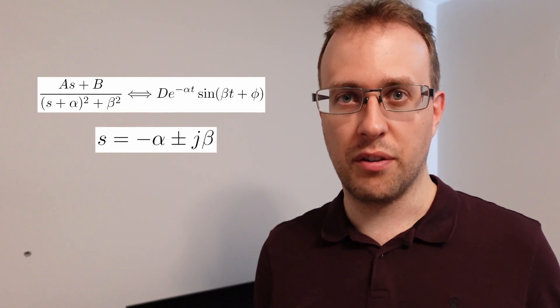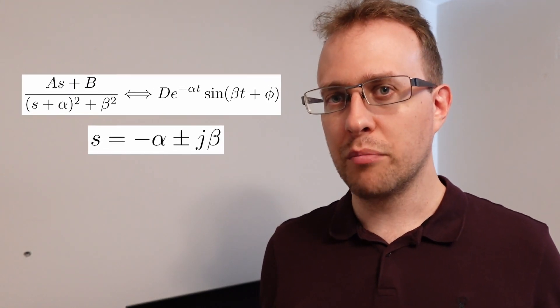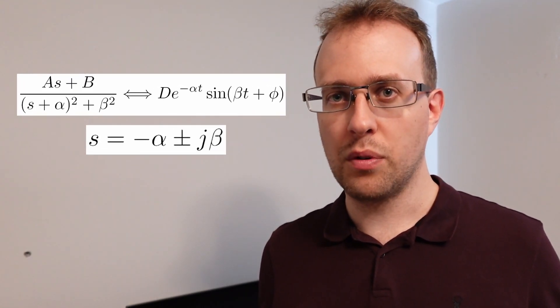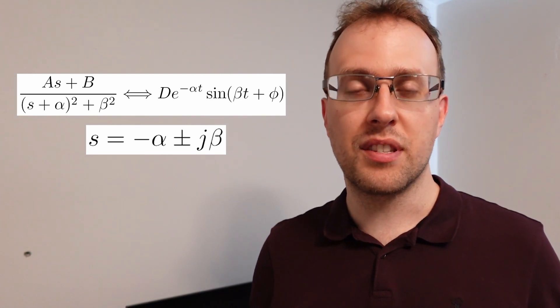Second, you can use the system's poles and zeros, particularly the real components of the complex poles, to determine whether a system is stable.